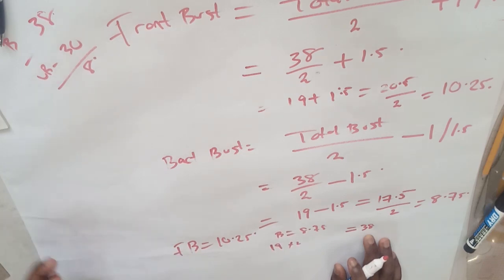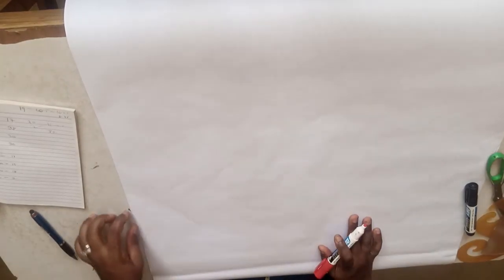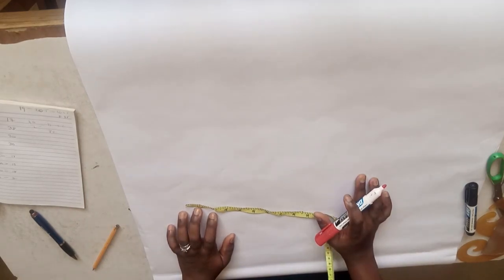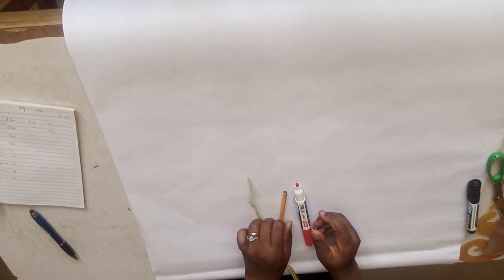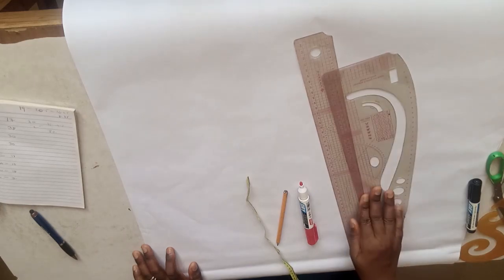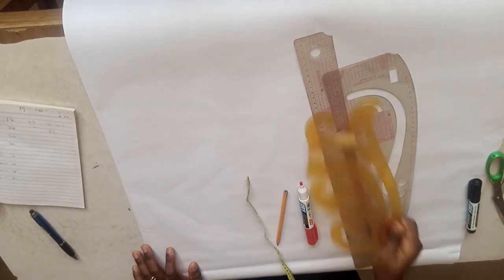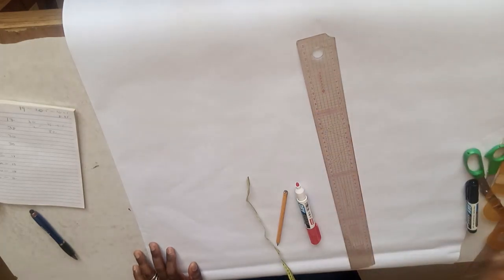Thank you for staying with us. Don't forget to subscribe and give this video a thumbs up, and turn on the notification bell to get more tutorials. Let's proceed with drafting our bodice. You'll need a marker or pencil, pattern paper, a straight ruler, and a pattern master or French curve — any of the available tools.